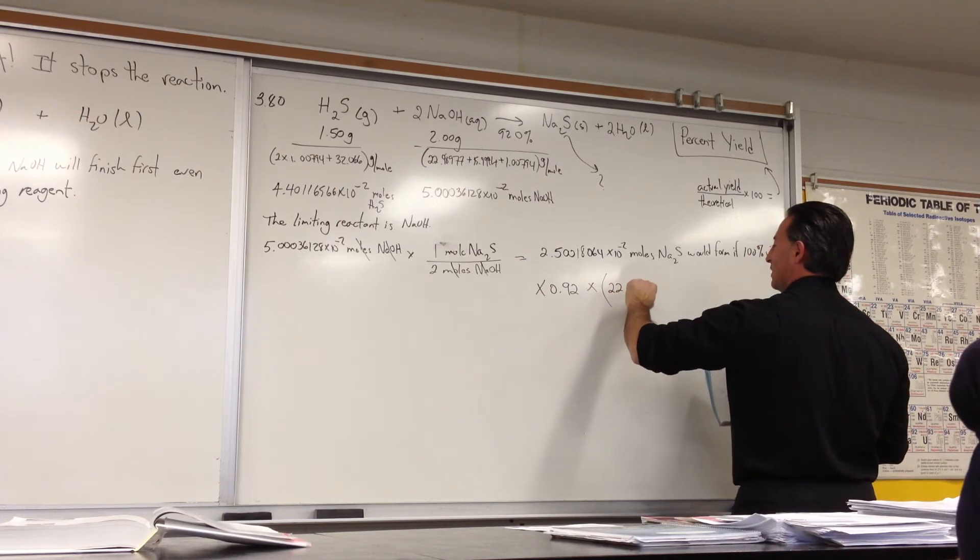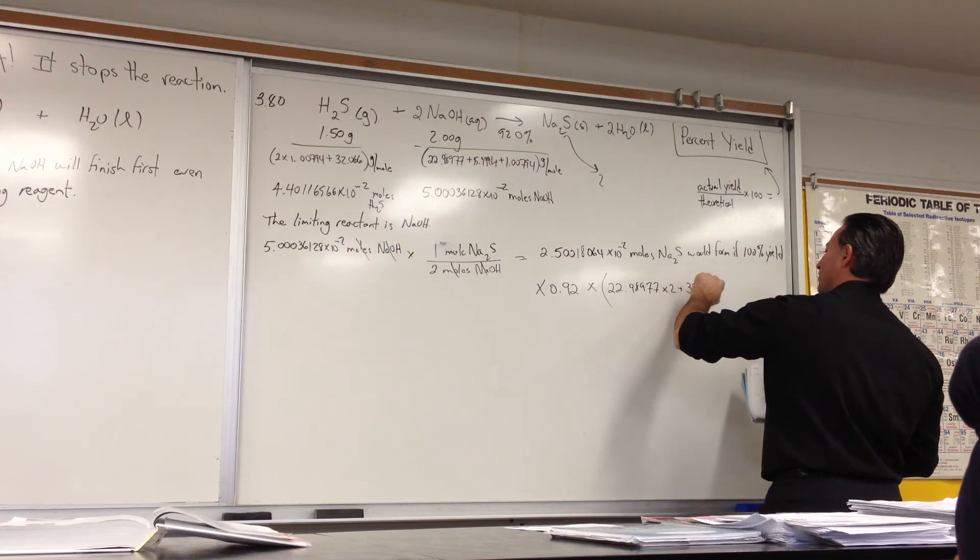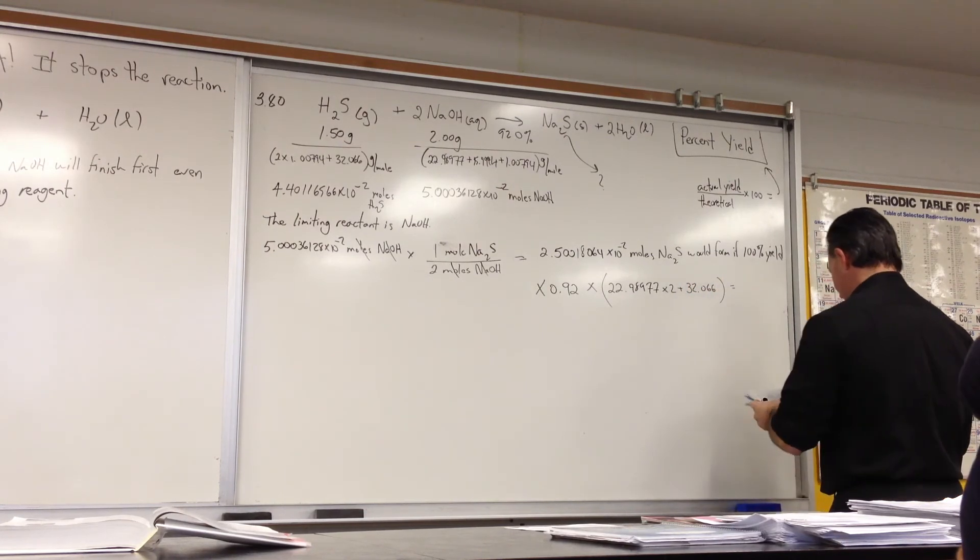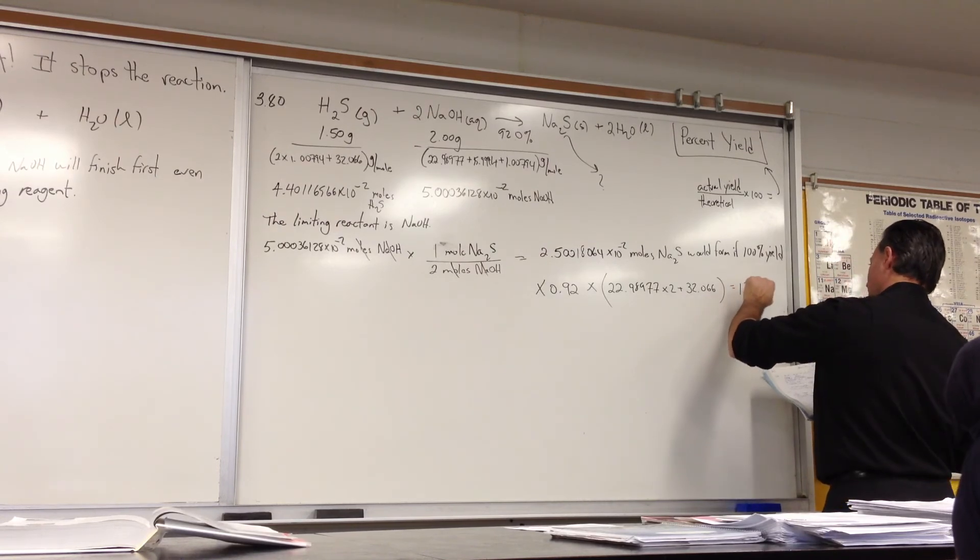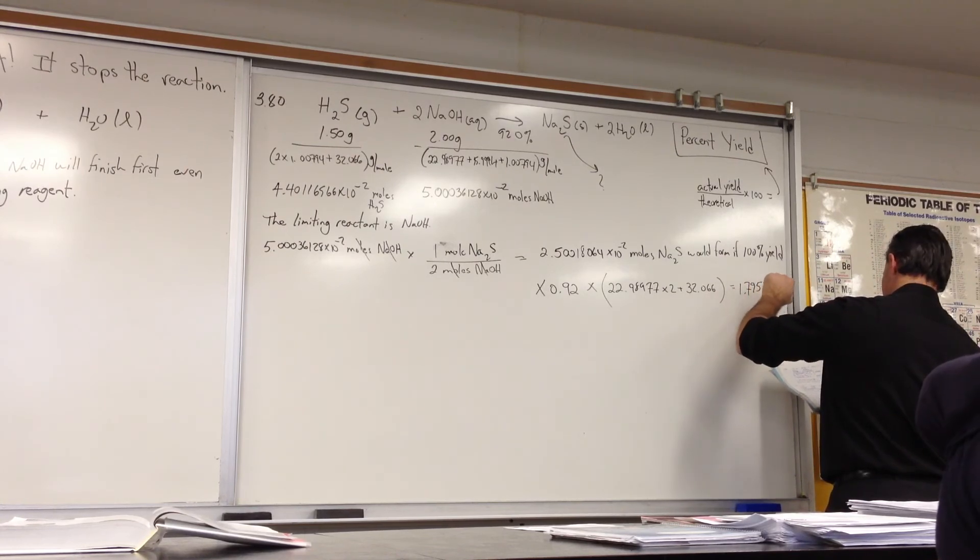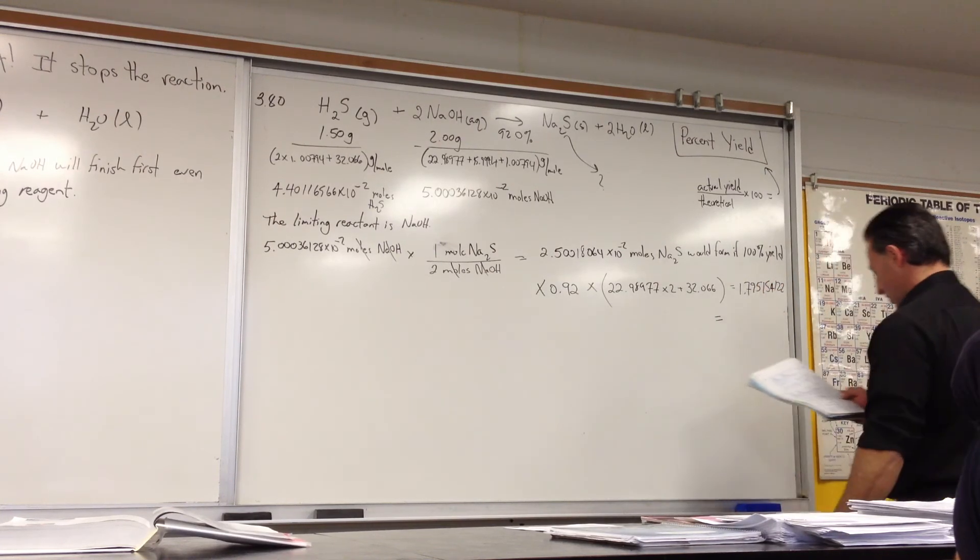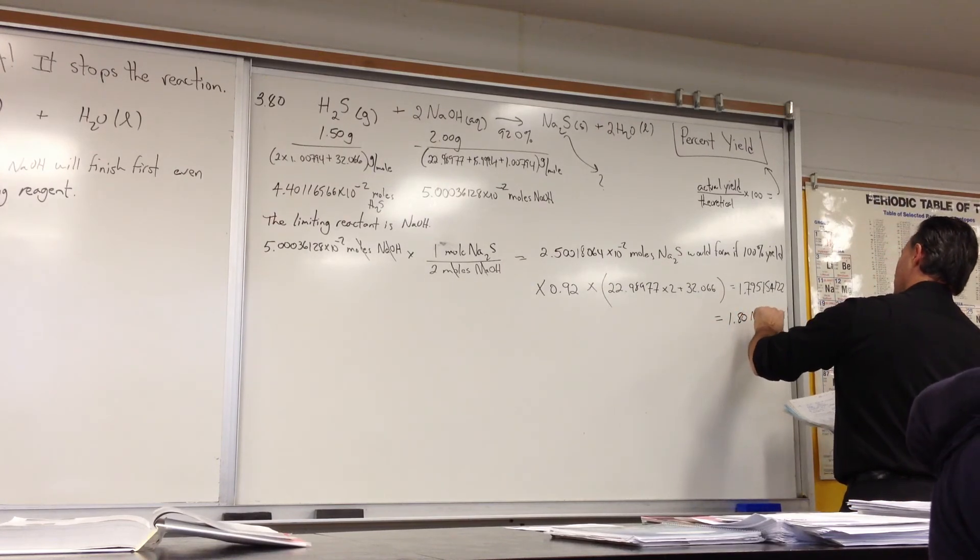The actual final number you get is 1.795. That's exactly what the calculated readout gave me. Of course, you're only allowed to report your answer to three significant figures. So it comes out that 1.8 grams of sodium sulfide is produced.